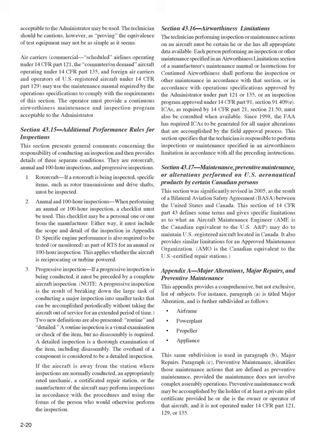Section 43.16, Airworthiness Limitations. The technician performing inspection or maintenance must have all appropriate data available. Each person performing an inspection or other maintenance specified in an airworthiness limitations section of a manufacturer's maintenance manual or ICA shall perform the inspection in accordance with that section, or in accordance with operations specifications approved under Part 121 or 135, or an inspection program approved under 14 CFR Part 91, Section 91.409(e). ICAs as required by 14 CFR Part 21, Section 21.50, must also be consulted when available. Since 1998, the FAA has required ICAs to be generated for all major alterations accomplished by the field approval process.